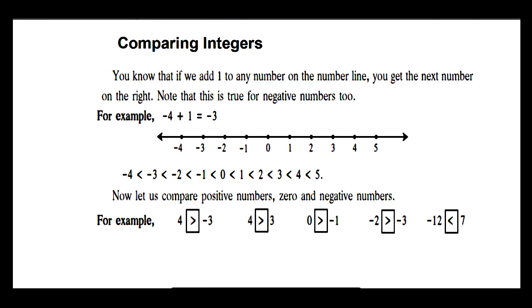For example, negative 4 plus 1 equals negative 3. Here we have a number line with 0 in the center. On the right side are positive 1, 2, 3, 4, 5. On the left side are negative 1, negative 2, negative 3, negative 4.